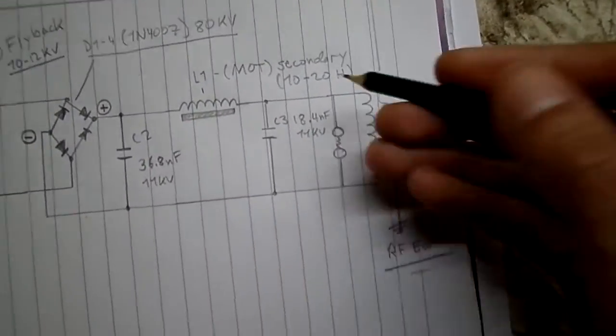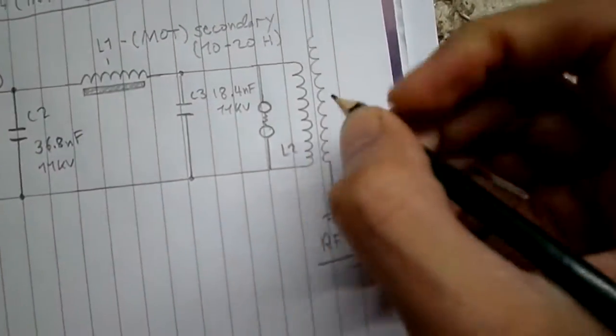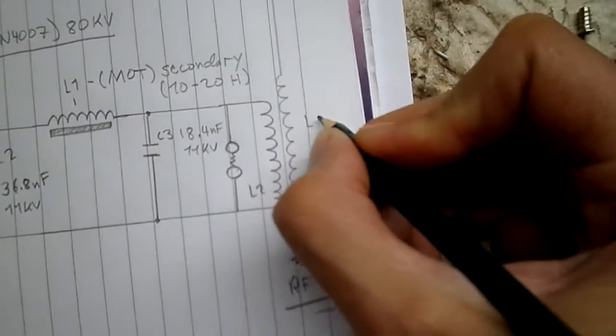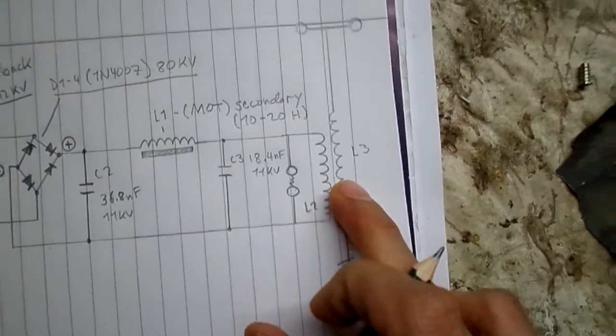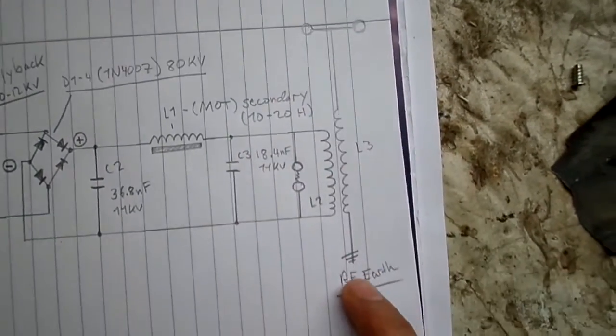That's L2. I just drew this out just now. And L3. So that's your primary coil, secondary coil obviously for the Tesla coil, which is RF, Earth.